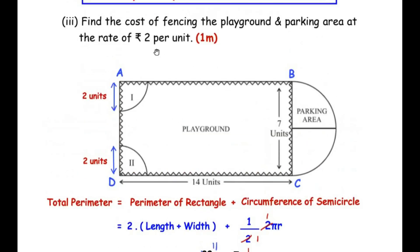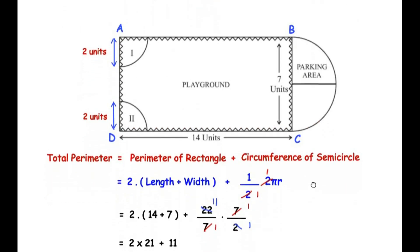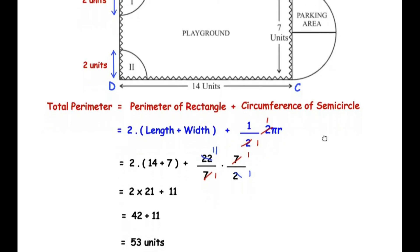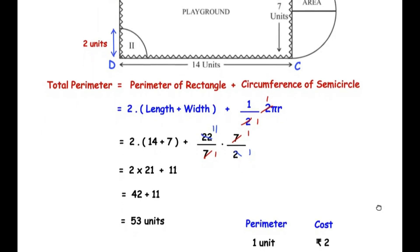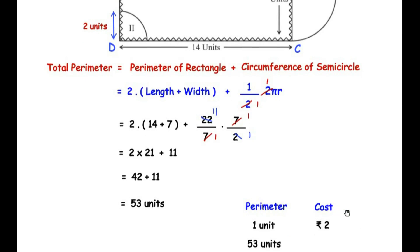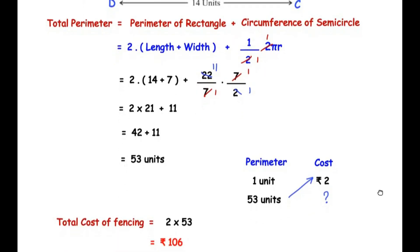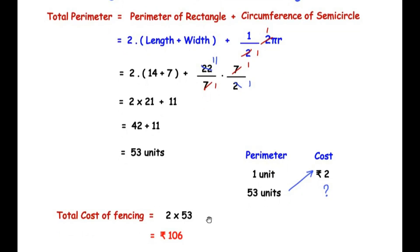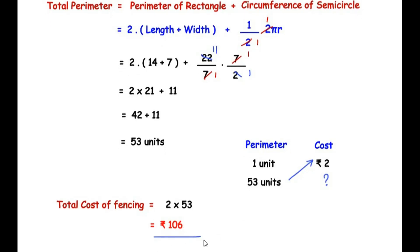The rate of fencing is ₹2 per unit and the total perimeter is 53 units. Using cross multiplication, the total cost of fencing is 2 × 53 = ₹106. So the total cost of fencing is ₹106. I hope you have understood all the steps and liked the video.